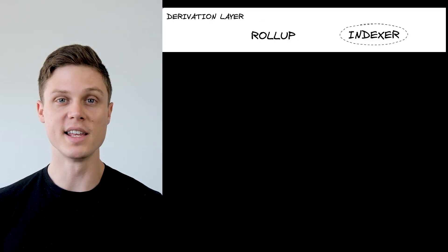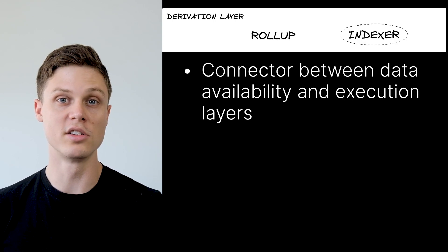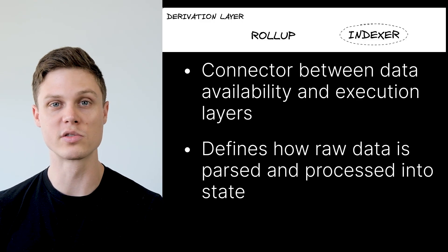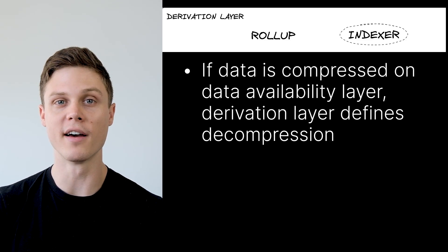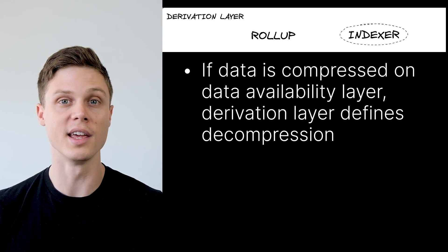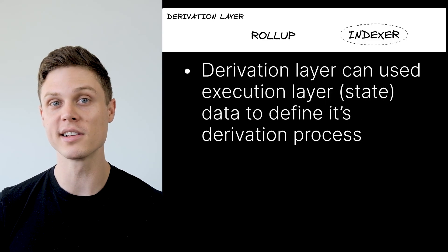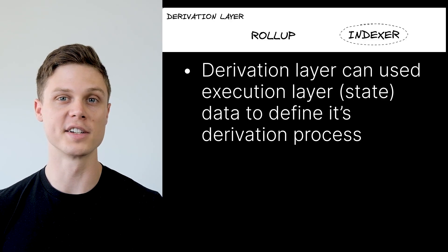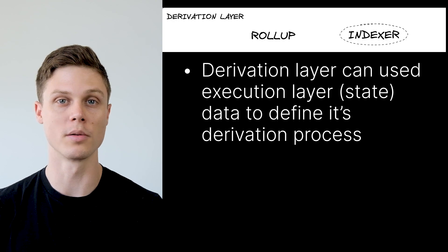The derivation layer is the connector between the raw data on the data availability layer — aka Ethereum — and the execution layer, aka the L2 chain. The derivation layer defines how this raw data is parsed and processed. For example, if the data in the data availability layer is compressed, the derivation layer would define how to decompress it for use in the execution layer. The derivation module can actually use data from the execution layer to define how it does this processing. The current module available for the derivation layer is the rollup module. However, there is a proposed module for the future called the indexer module.